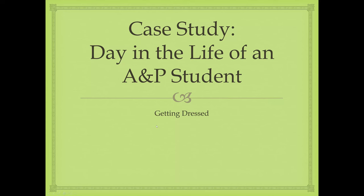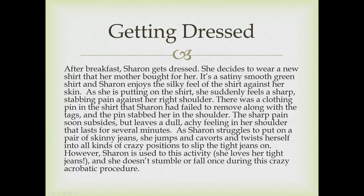Now we're going to move on to the next part, which is getting dressed. After breakfast, Sharon gets dressed and decides to wear a new satiny smooth green shirt. She enjoys the silky feel of the shirt against her skin. As she is putting on the shirt, she suddenly feels a sharp stabbing pain against her right shoulder — there was a clothing pin in the shirt that stabbed her in the shoulder. The sharp pain soon subsides but leaves a dull, achy feeling that lasts for several minutes. As Sharon struggles to put on skinny jeans, she jumps and twists into all kinds of crazy positions but doesn't stumble or fall.